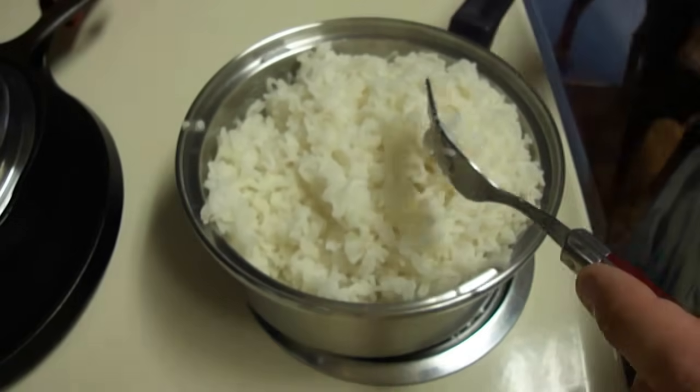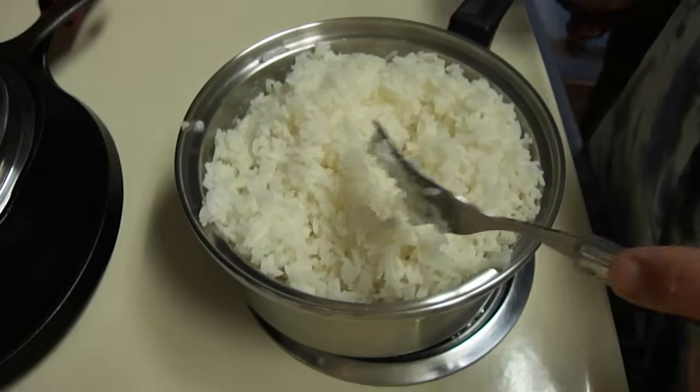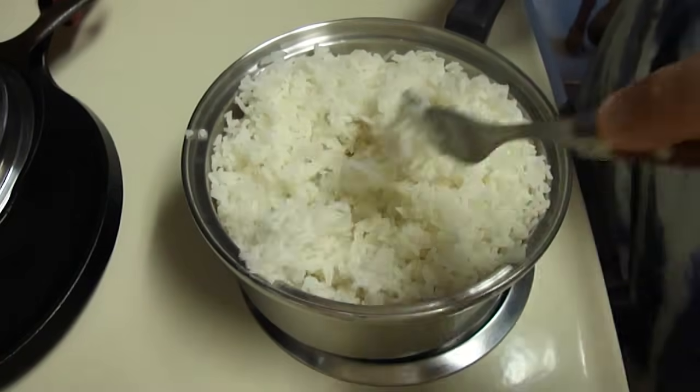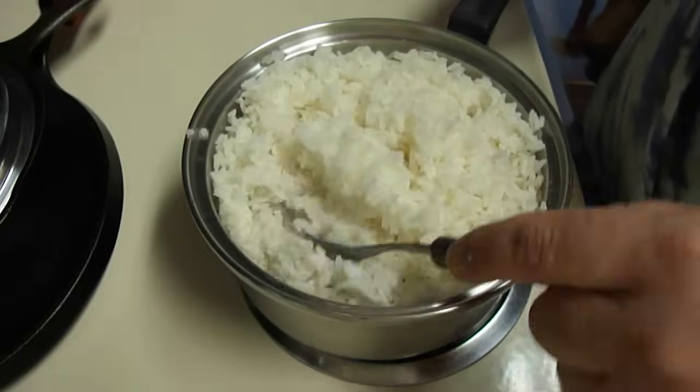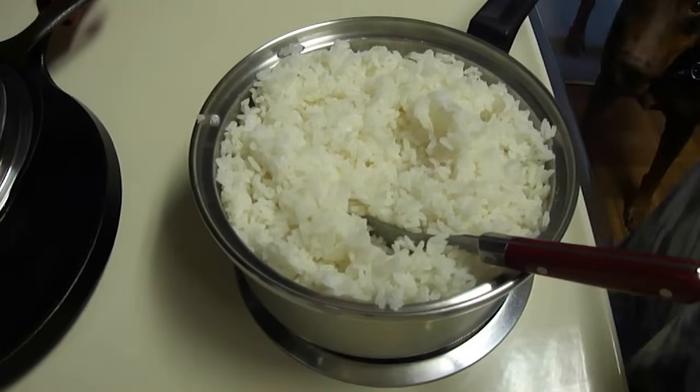And if you follow the instructions on the package of the rice, you will get gummy and sticky rice. So this is how I do it: three cups water, two cups of rice, cook it covered for 20 minutes, and then let it set for five. And there you go, nicely steamed white rice. Thanks for watching.